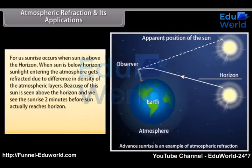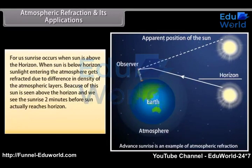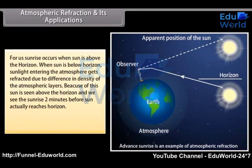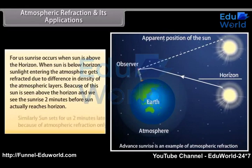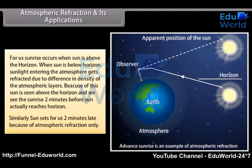For us, sunrise occurs when the sun is above the horizon. When the sun is below the horizon, sunlight entering the atmosphere gets refracted due to difference in density of the atmospheric layers. Because of this, the sun is seen above the horizon and we see the sunrise about two minutes before the sun actually reaches the horizon. Similarly, the sun sets for us about two minutes late because of atmospheric refraction.